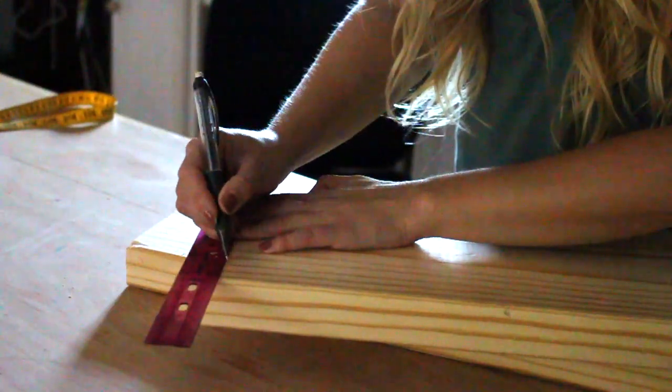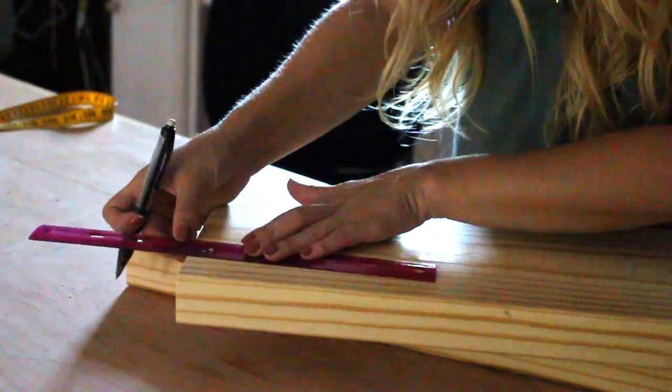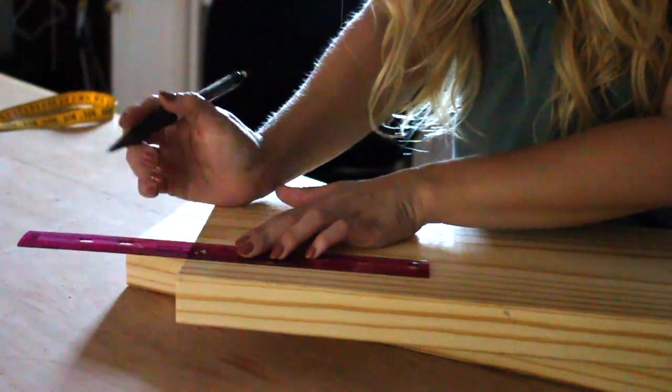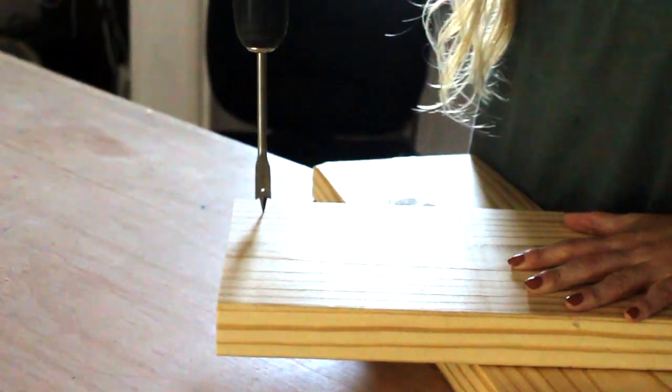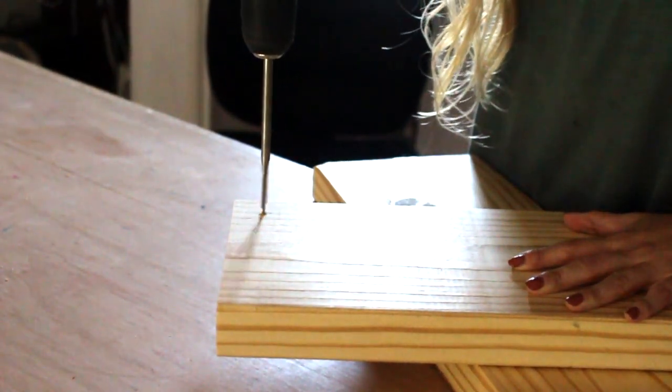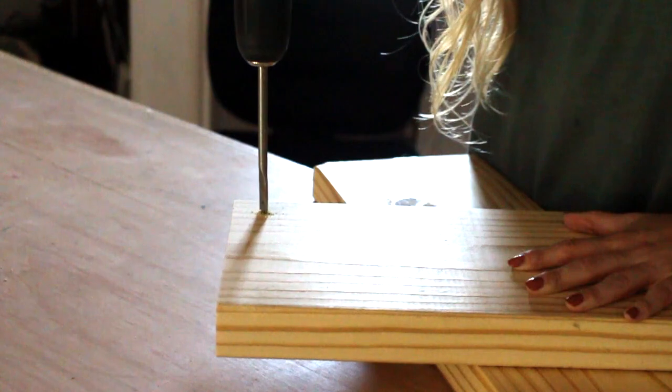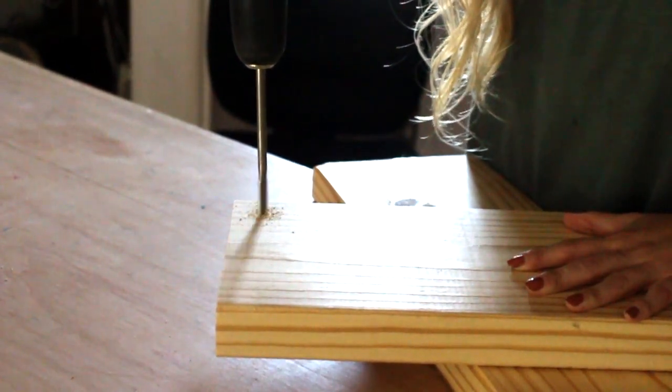Measure 1 inch from each edge on the corners and mark an X where the two intersect. Take your drill with a 3/4 inch spade bit attached and drill holes on each corner using the X as your location for starting.